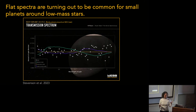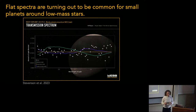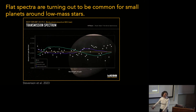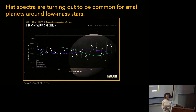Some of us were at the Extreme Solar Systems meeting in New Zealand a few weeks ago, and it became a running joke through the entire meeting: 'here is my next flat spectrum, here is my next flat spectrum.' It was funny and sad all at the same time.